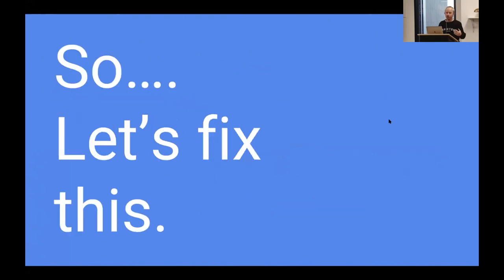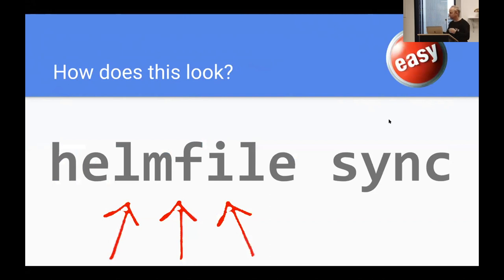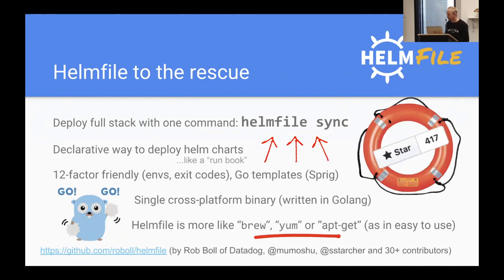What I'm going to talk about now is how we can fix this — with one simple command: helmfile sync. Literally, this is all you need to do to deploy 60 or 100 or more services to your cluster in one fell swoop. It's great for bringing up the cluster and for keeping your cluster in sync with your Git repos that contain the definitions for what should be installed. The name Helmfile is kind of a pun on what's existed forever — like a makefile or a Jenkinsfile — and it's just a declarative way to define what you want installed in your cluster.